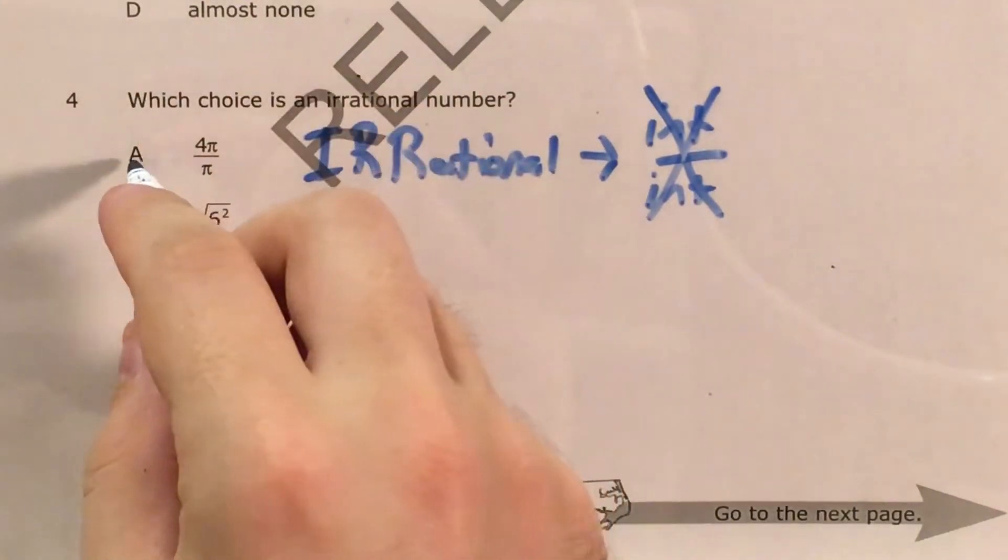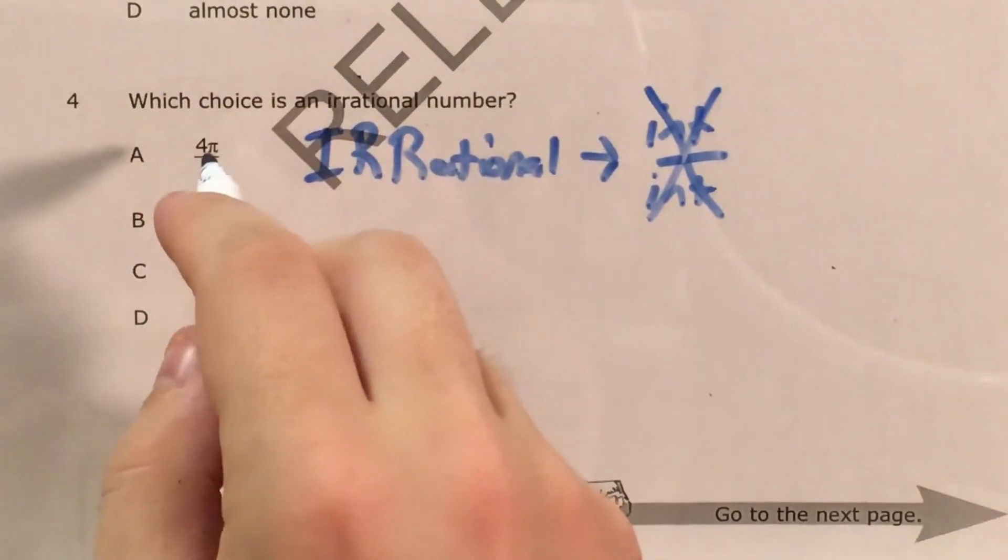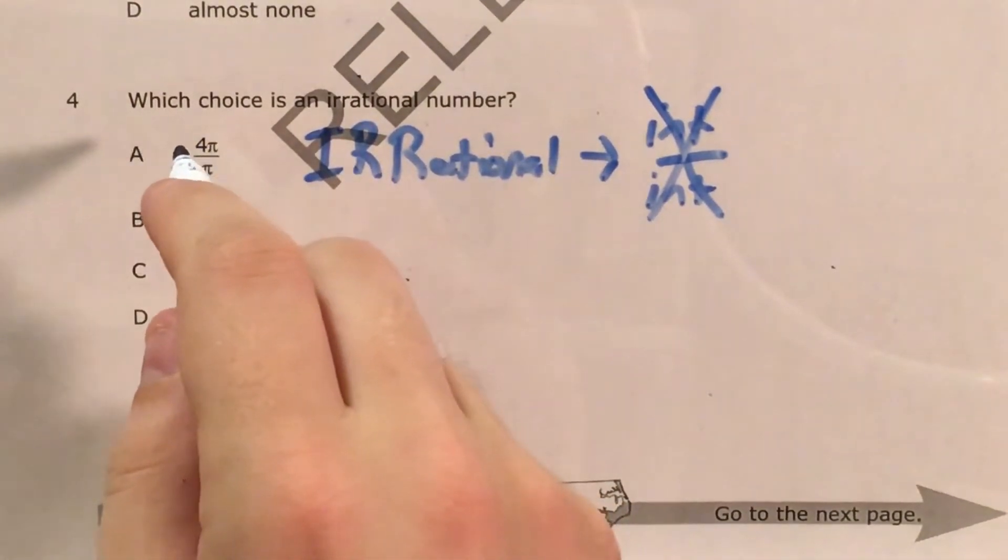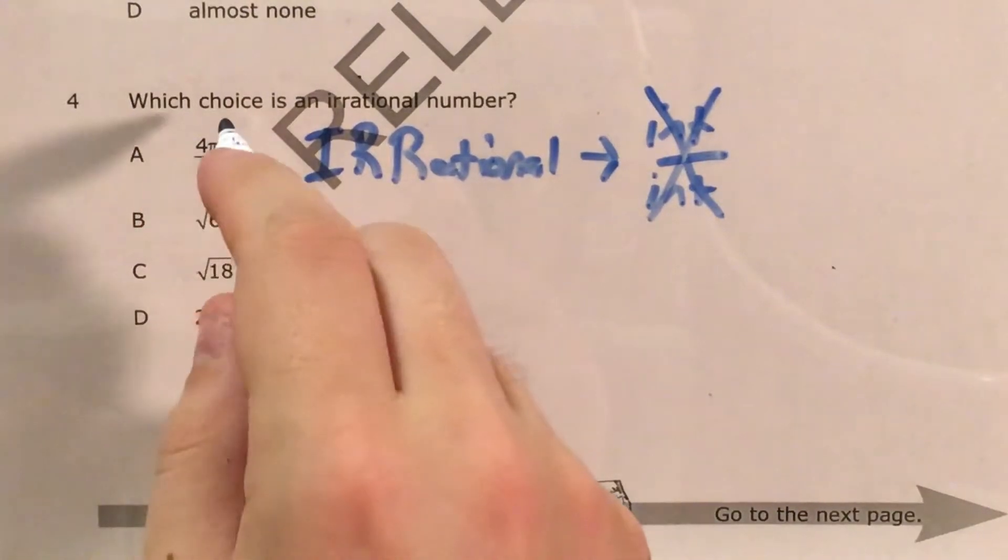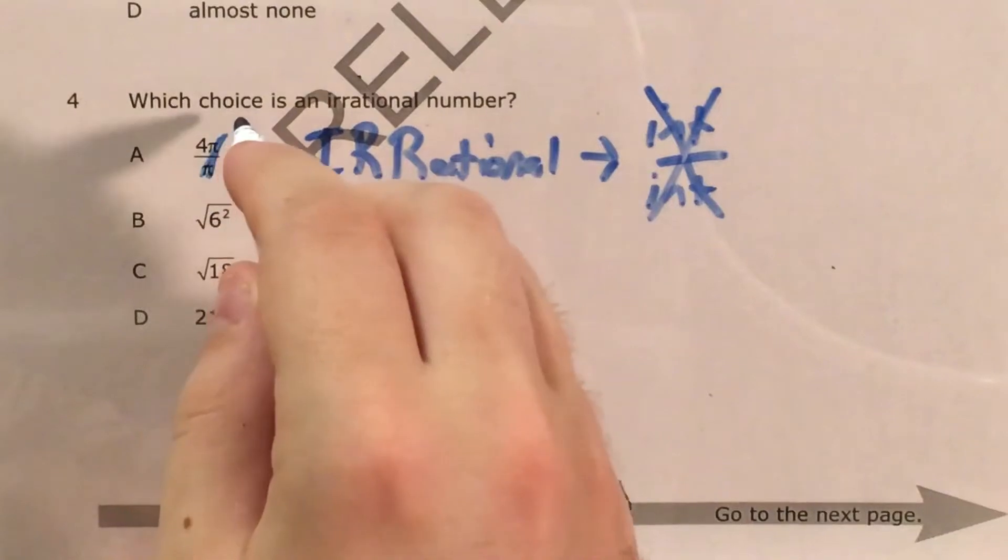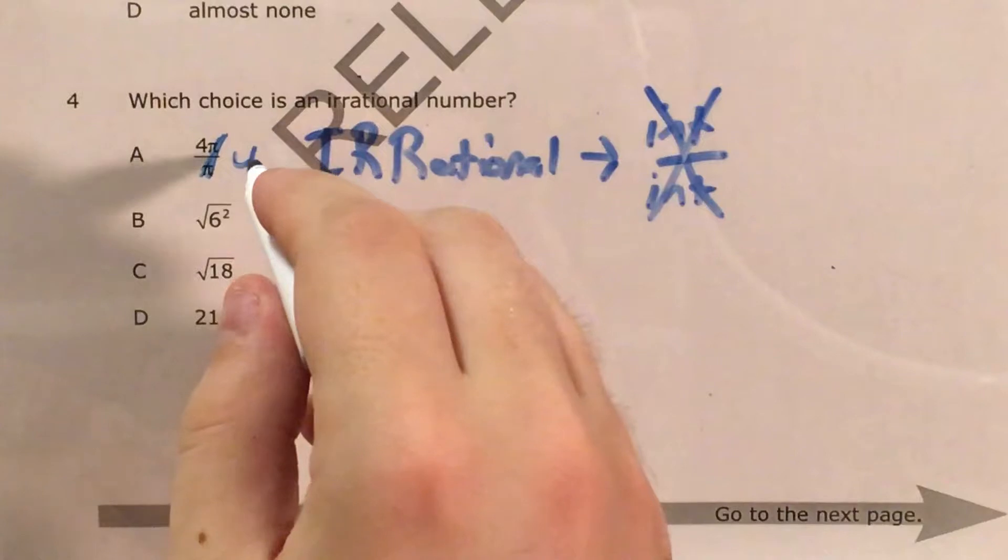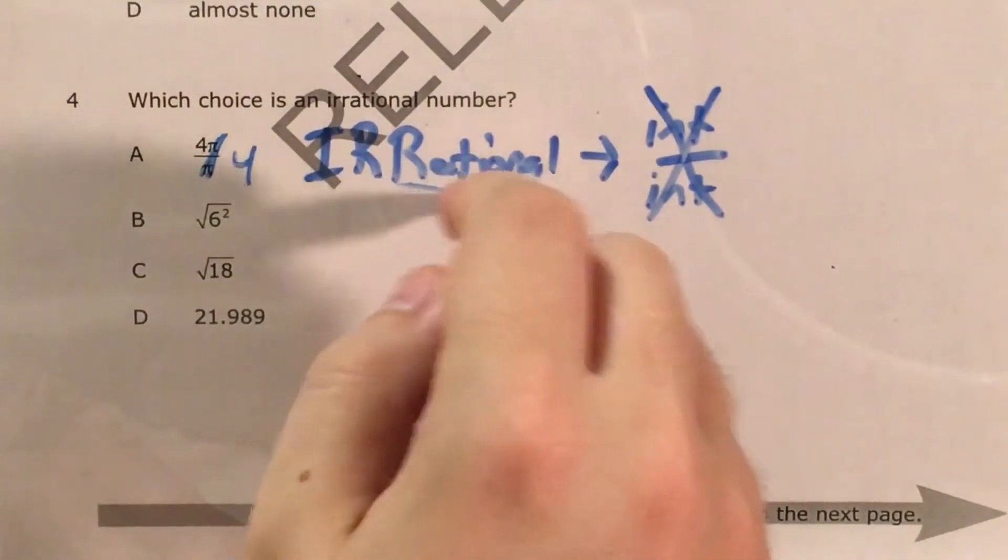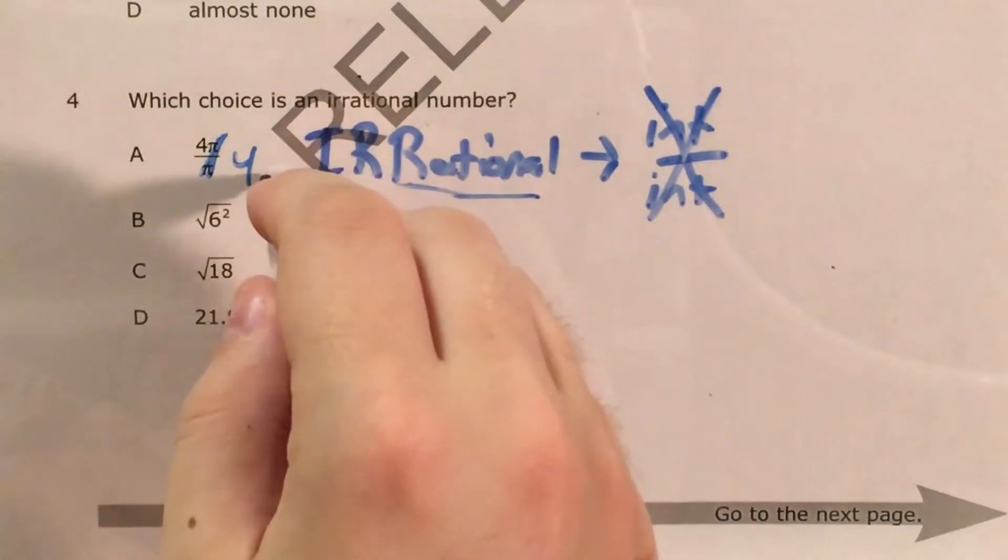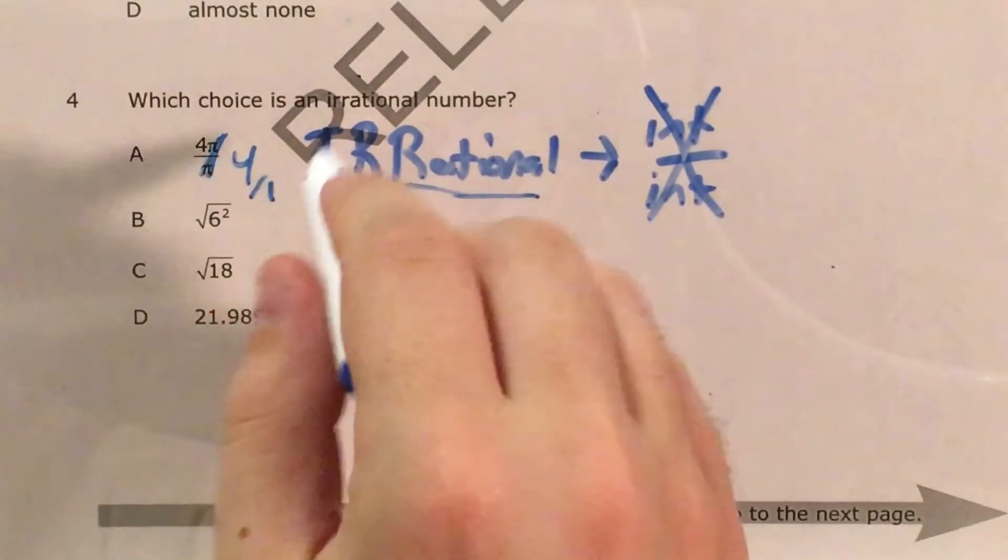I'm actually going to start at choice A, 4π divided by π. If you know your rules of fractions and dividing out factors of numbers in your numerator and denominator, you know that we can just say π divided by π is gone, and this is just 4. Any counting number, any natural number or whole number, we consider to fall under this umbrella of rational, because we can say it's 4/1 or 4 wholes. So that can be written as a fraction.